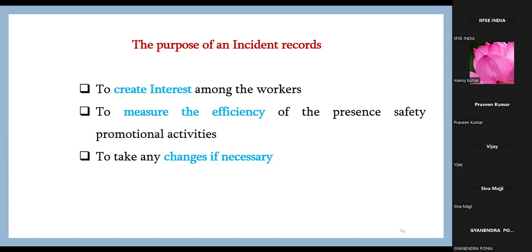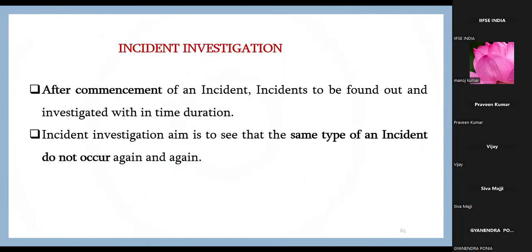Measure the efficiency of safety promotional activities and take changes if necessary. If an incident occurs, changes include redesigning engineering controls for mechanical incidents, addressing people-related issues, changing the process if needed, updating training, revising the risk assessment, and changing SOPs. A lot of changes will be brought in as a result.